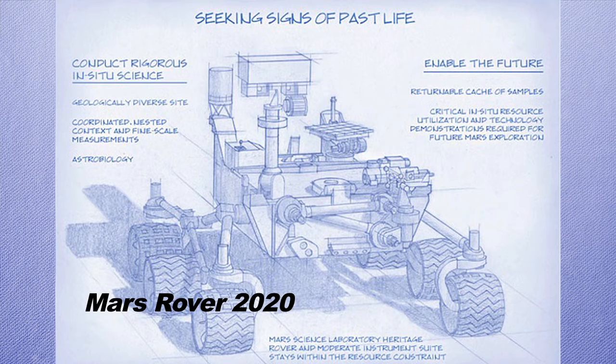Instead of the previous phase where many different concepts could meet the objectives, Phase A uses one baseline concept to flush out a little more detail. There may sometimes be more than one concept, but you are trying to move towards a single design as opposed to many different concepts that can meet requirements.